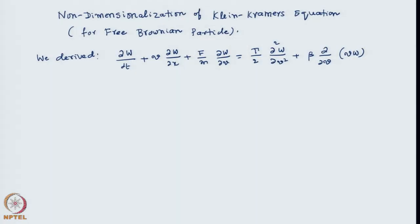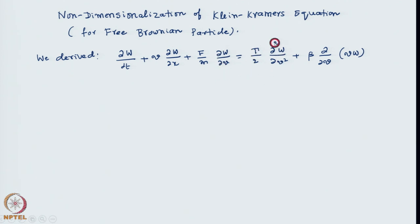We derived this following equation in the previous lecture: dw/dt plus v(dw/dx) plus the external force dw/dv equals gamma/2 times d²w/dv² plus beta times d/dv of (vw). We can in fact combine these two by taking d/dv out, but here we write explicitly.